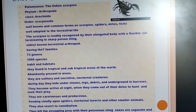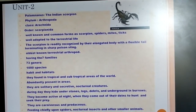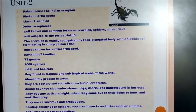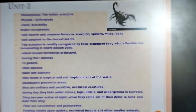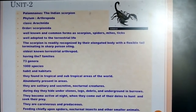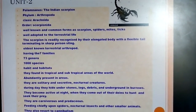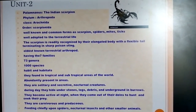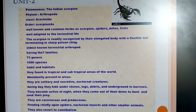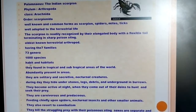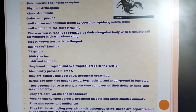They are segmented and have an elongated body with a flexible tail called the telson. The poisonous sting is also known as the telson, which is present in the post-abdomen part. There are seven families and 73 genera present.